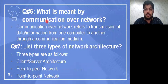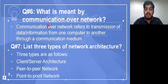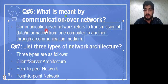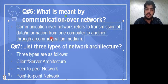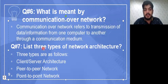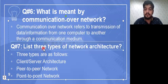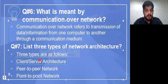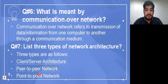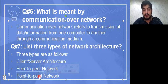The sixth question is: what is meant by communication over network? Communication over network refers to the transmission of data and information from one computer to another through a communication medium — the transmission medium through which our data is transferred. There are three types of network architecture: client-server network architecture, peer-to-peer network architecture, and point-to-point network architecture.